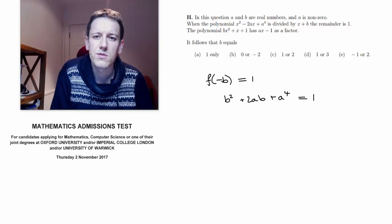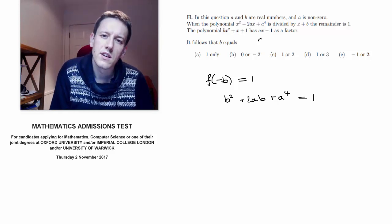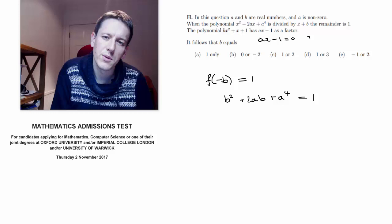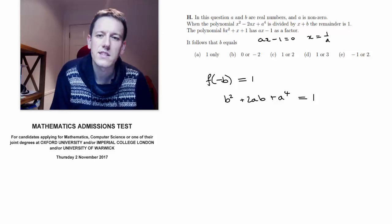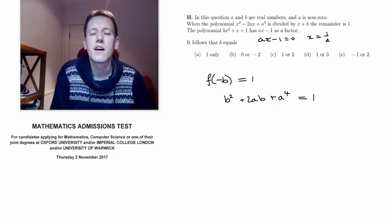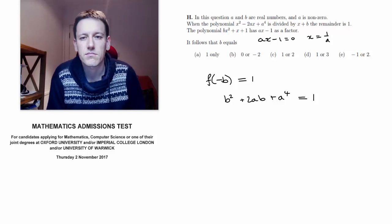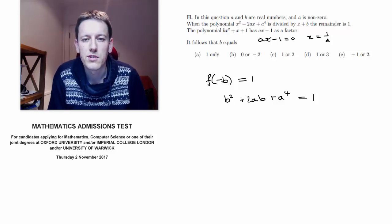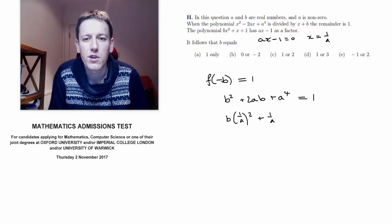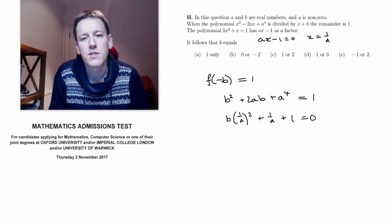And if ax minus 1 is a factor, you can rearrange ax minus 1 equals 0 to get x equals 1 over a, and that means that 1 over a is a root of this polynomial, so b times 1 over a squared plus 1 over a plus 1 must equal 0.